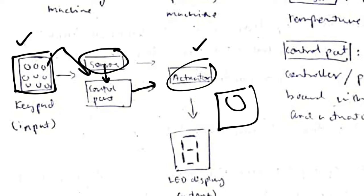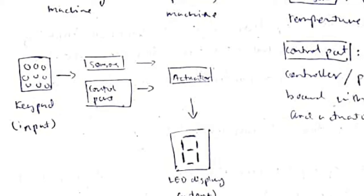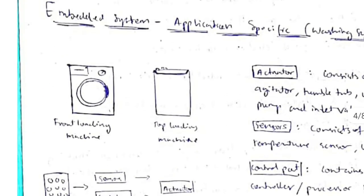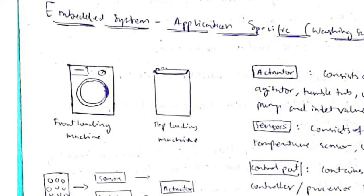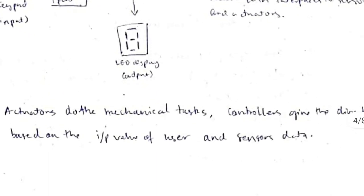Using both the user input and sensor data, the control part directs the actuator to perform the task of washing the clothes. After completion, the remaining time is displayed on LEDs. This is an application-specific example — the washing machine is designed for one specific application, not domain specific.